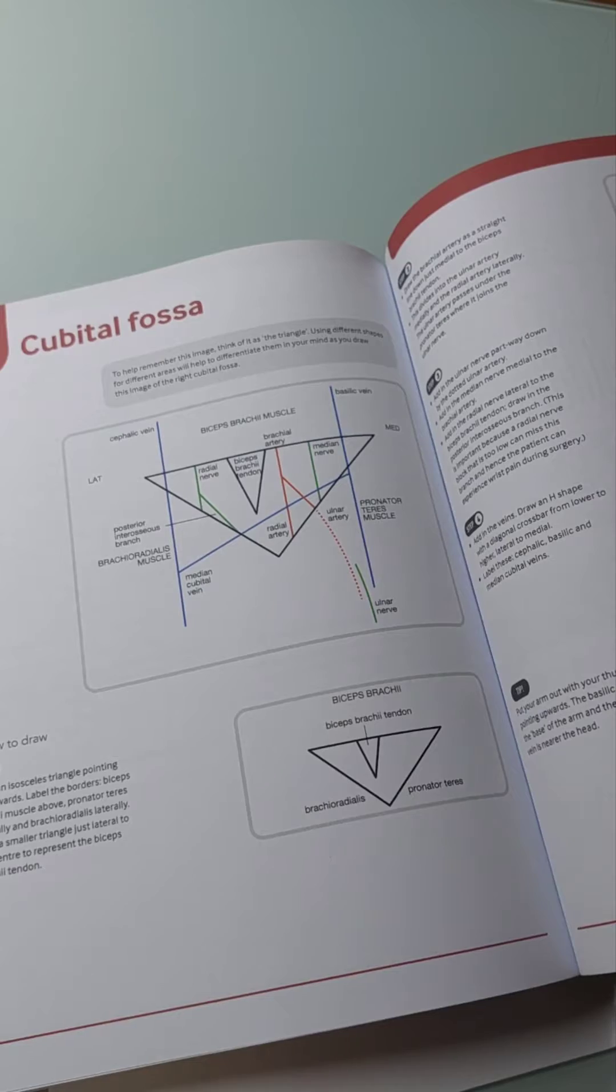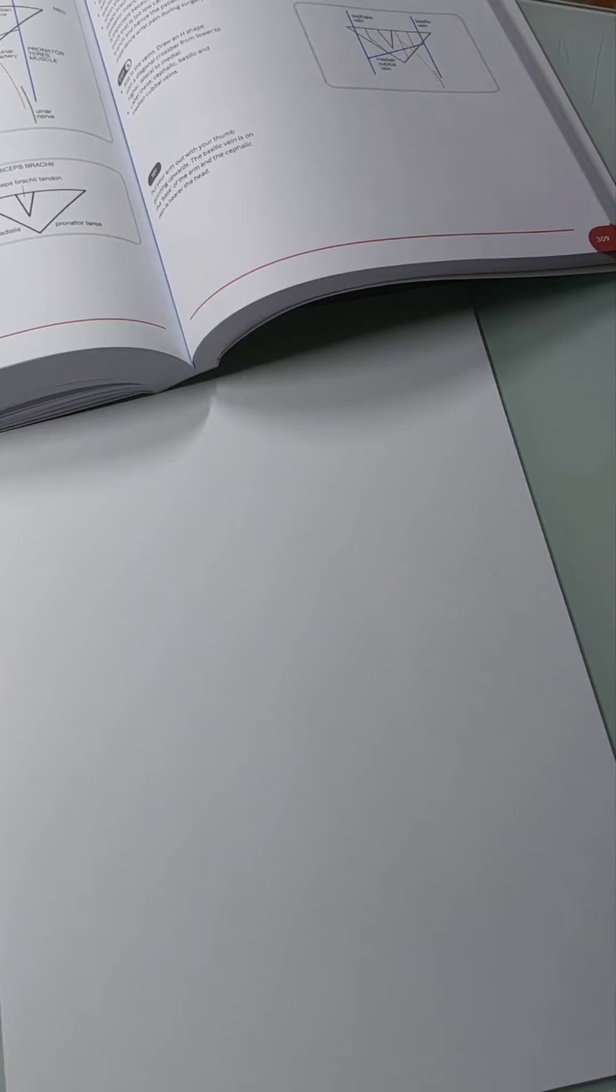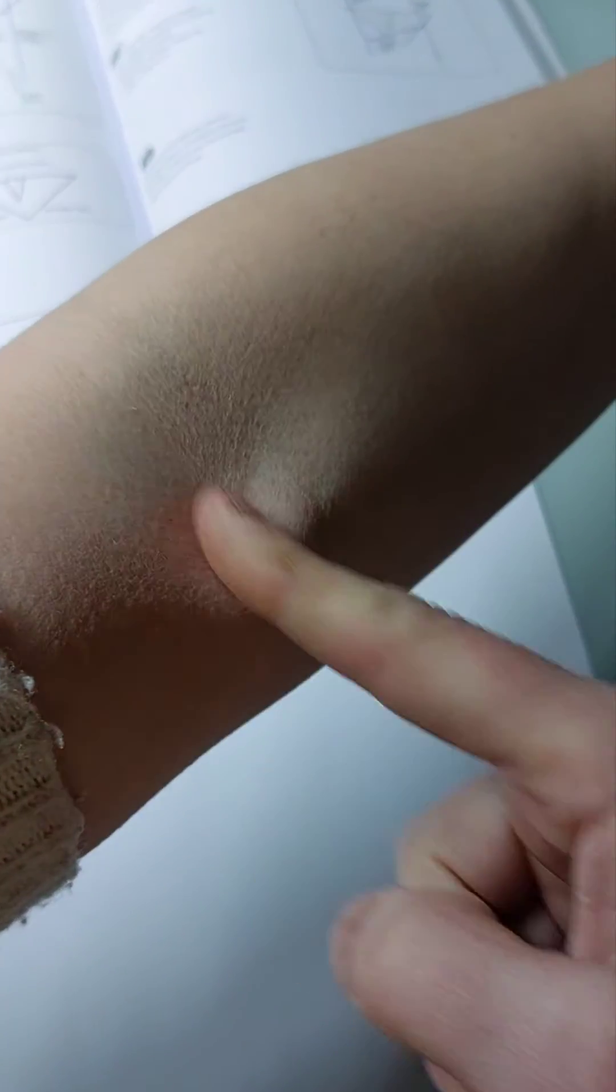Today's tutorial will be the cubital fossa. This is the triangle in your arm. If I put my arm here, we're thinking of this kind of area here as a triangle.